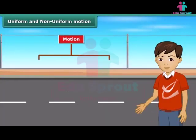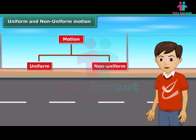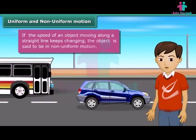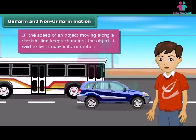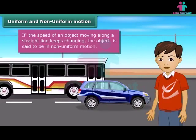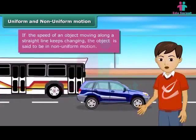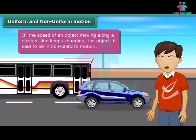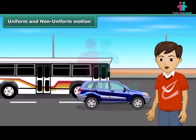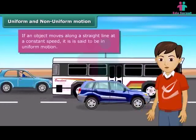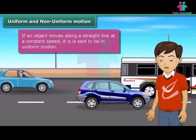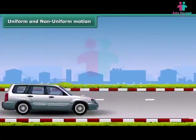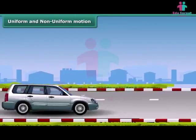Motion can be classified as uniform or non-uniform depending on the speed of an object. If the speed of an object moving along a straight line keeps changing, its motion is said to be non-uniform. A bus, for example, moves at varying speeds over varying stretches on its long route. Hence its motion is non-uniform. If an object moves along a straight line at a constant speed, then it is said to be in uniform motion. A car, for example, may maintain the same speed when it covers a short distance.